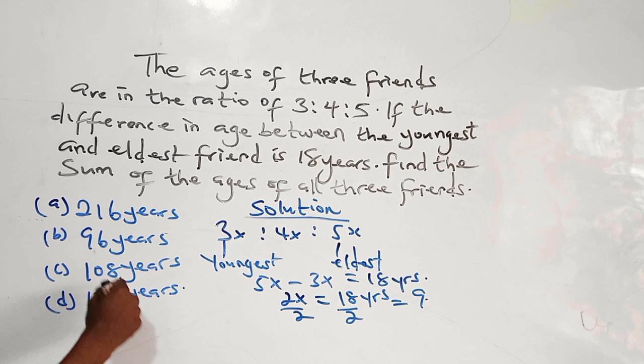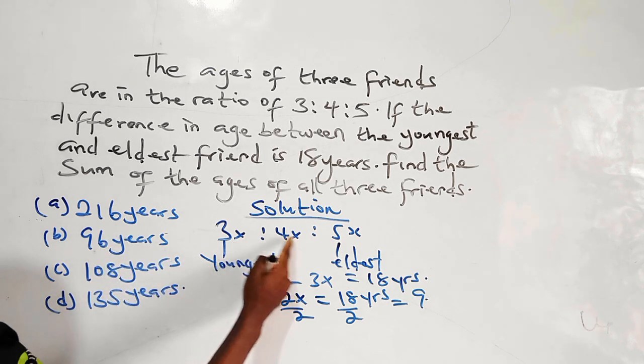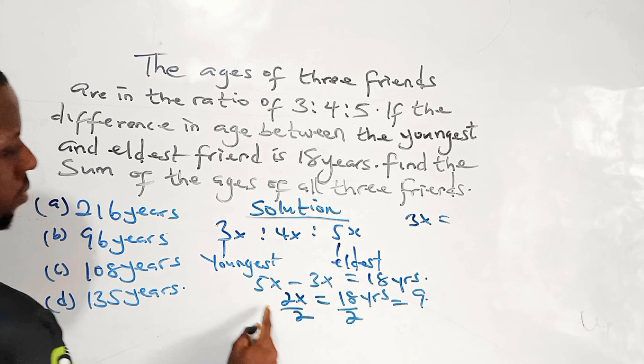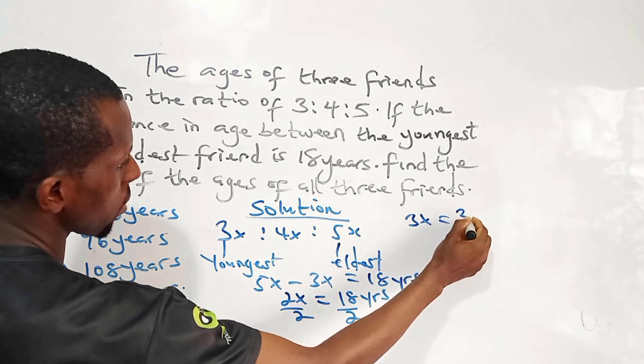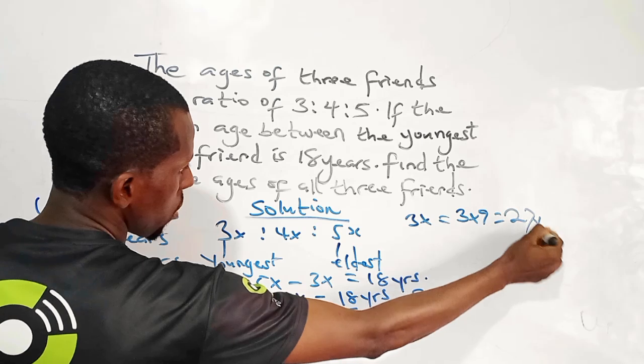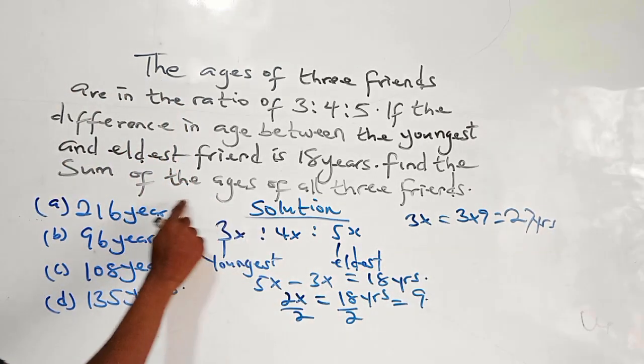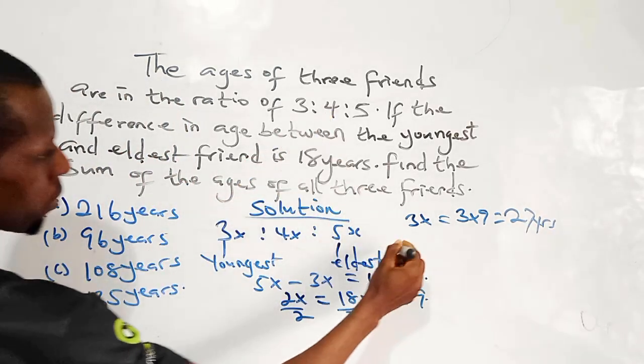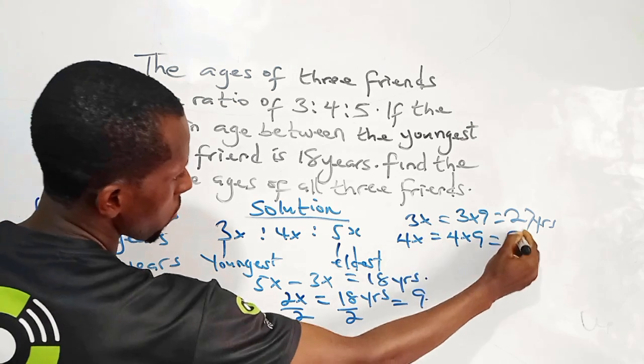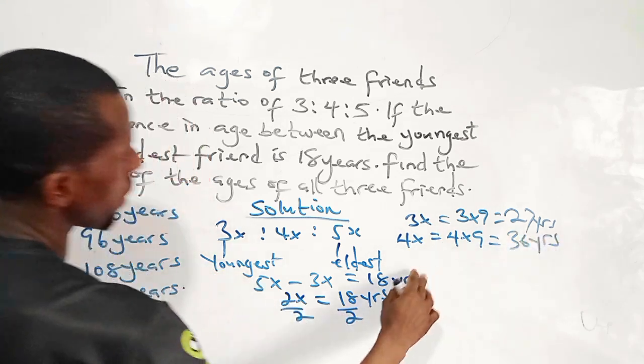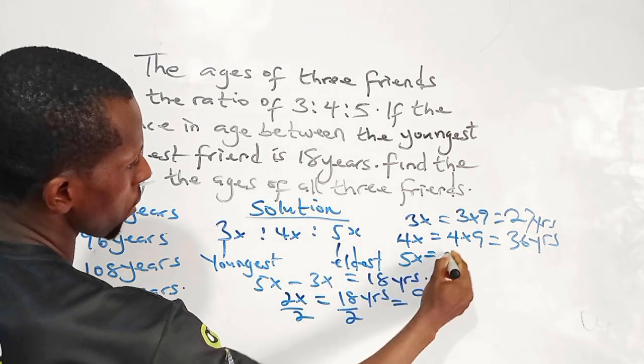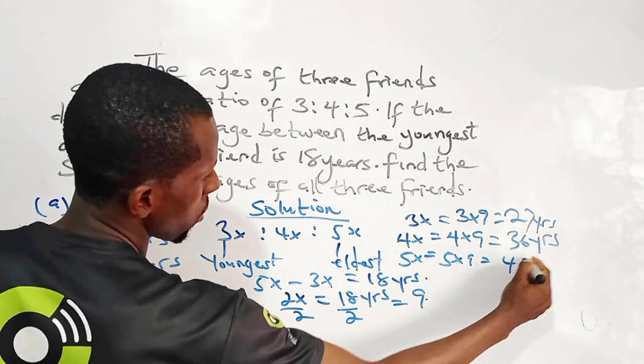So from here now, we can determine the individual age. So for 3x, since the value of x now is 9, we can say 3 times 9, that is 27 years. So for the second friend, we have it to be 4x, so we can say 4 times 9. 4 times 9 is 36 years. And for the eldest, which is 5x, we say 5 times 9, that is 45 years.